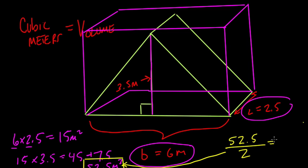Well, 52 divided by 2 is 26, right? And 0.5 divided by 2 is 0.25, so it's 26.9. And that's cubic meters, or meters to the third power. That's my answer. Thanks.